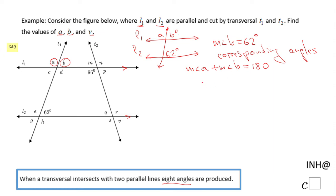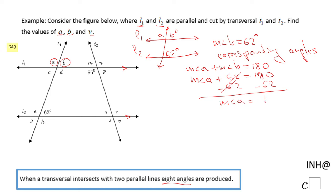As we found in the previous step, the measure of angle B is 62 degrees. So the only thing we need to do is subtract 62 from 180, giving us the measure of angle A equal to 118 degrees. So A = 118°, B = 62°. Now we can move to the next variable, which is V.